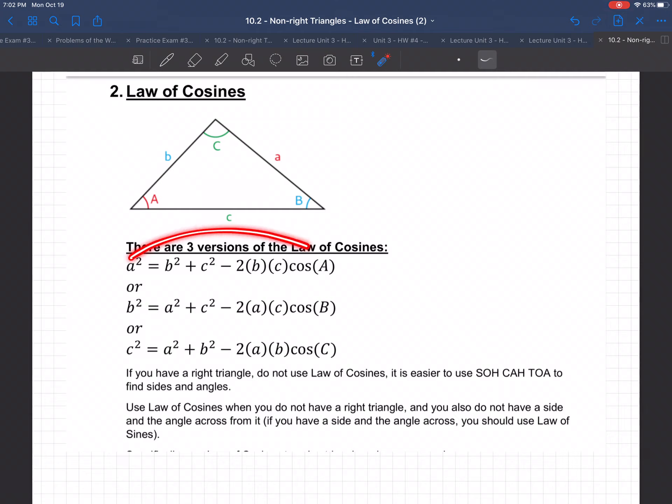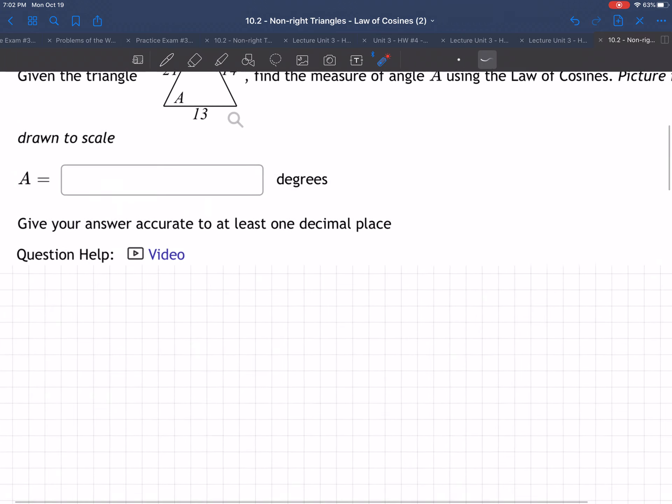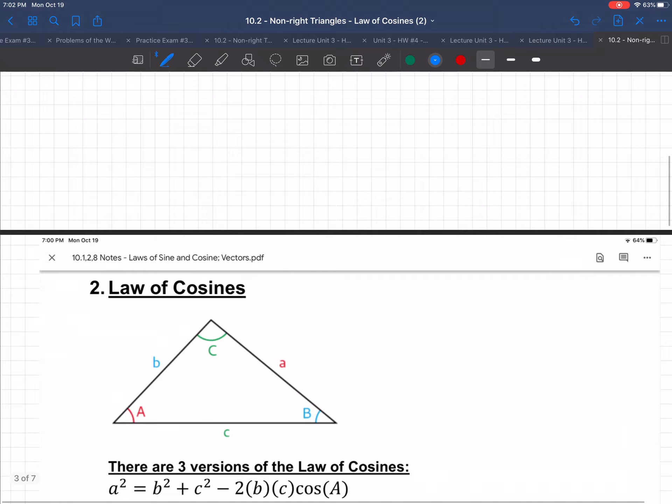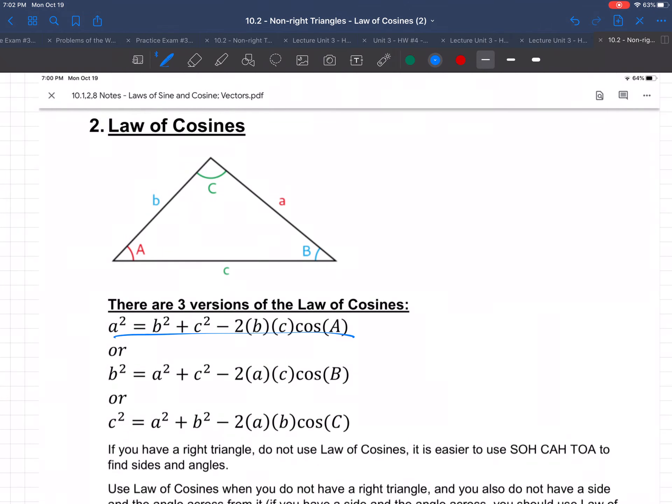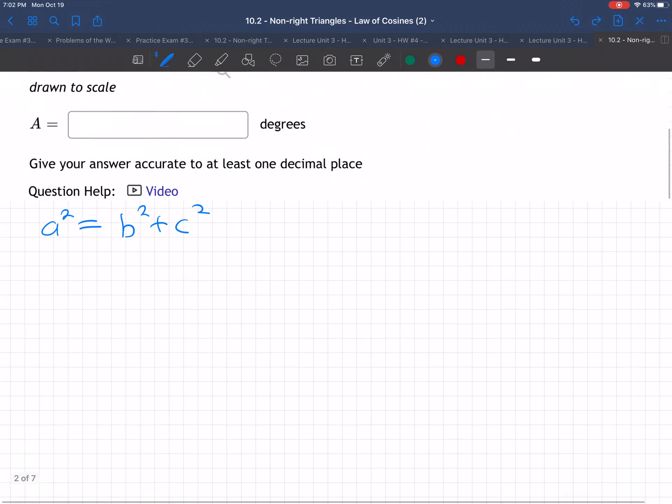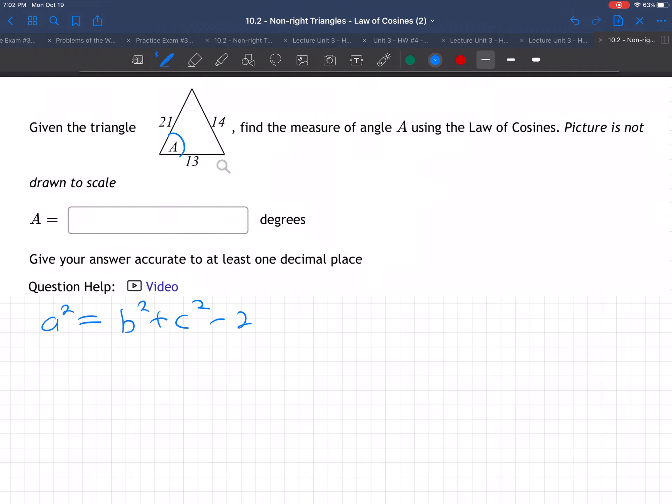So you're basically connecting an angle and the side across from it, right? A's across from A, like A's across from A, with B and C in the middle. Okay, so let's do it. So we're trying to find angle A, so I'll write out the law of cosines, which is A squared is B. Oh yeah, how did I know which version to use? Well, I'm trying to find capital A, so I want to use the A version, this one right here. So I will do that.